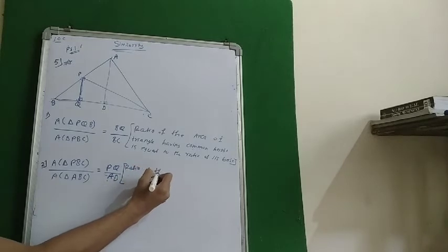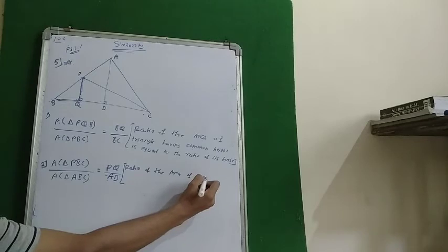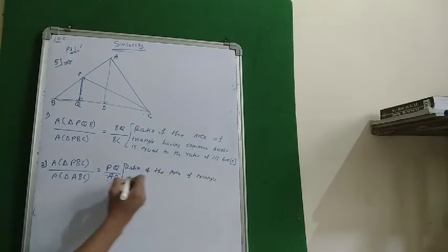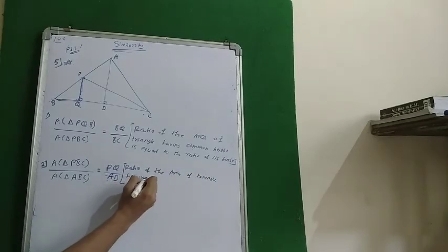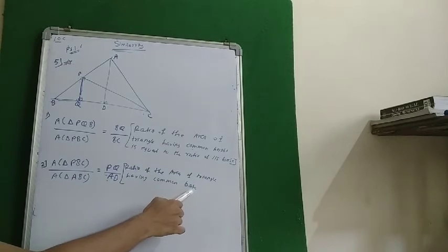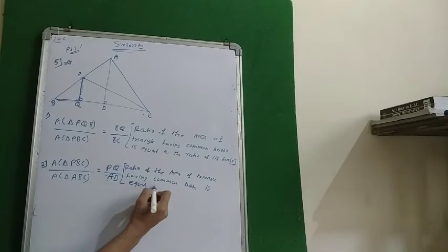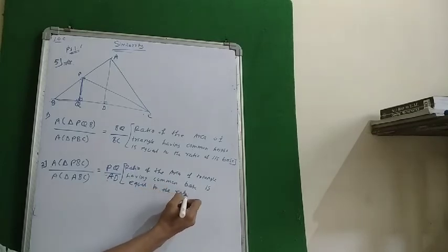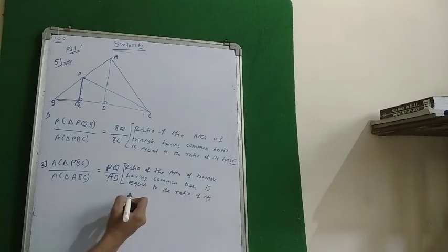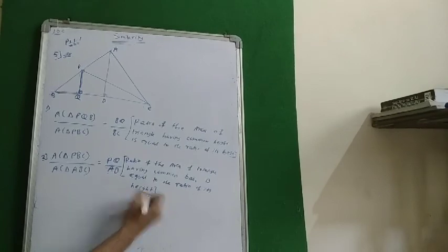We write the reason: the ratio of area of triangles having a common base — here it is common base, whereas earlier it was common height — is equal to the ratio of their heights.